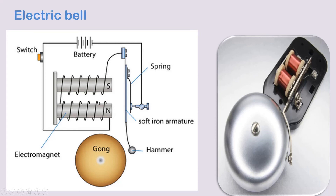As long as current flows, the electromagnet attracts the soft iron bar, causing the hammer to strike the gong and produce sound. When the soft iron bar is attracted by the electromagnet, the connection between the spring and the pin breaks, making it an open circuit — so no current flows and the electromagnet loses its magnetic property. The iron strip then returns to its original position, closing the circuit again. Current flows once more, the iron bar behaves like a magnet, attracts the soft iron piece, and the hammer strikes the gong again. This cycle repeats continuously.